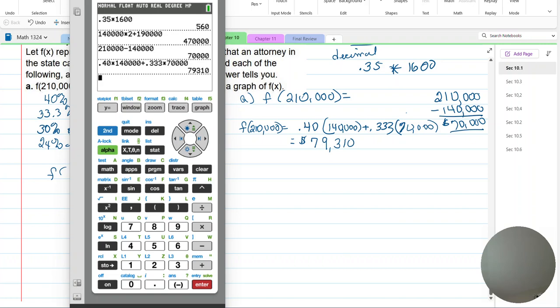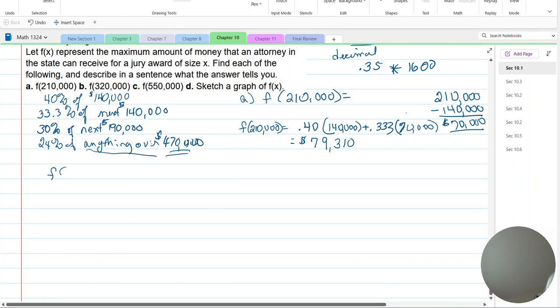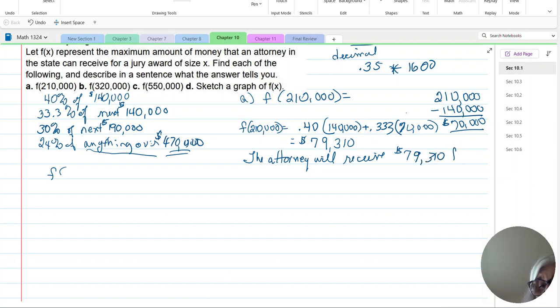So the attorneys will get $79,310 for their services in getting that award. So what does it tell us? It tells us several things. Now we write the sentence. For the award of $210,000, the attorneys will get $79,310 as part of their earnings for the award of $210,000 to whoever they were representing.